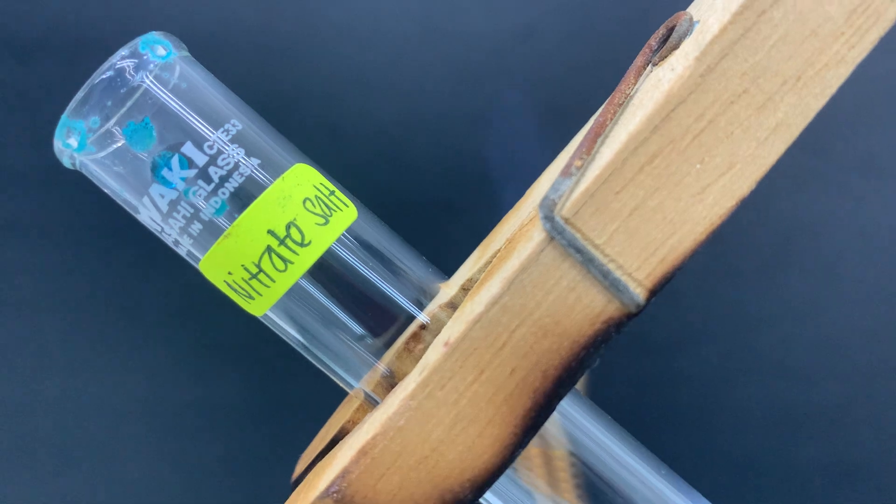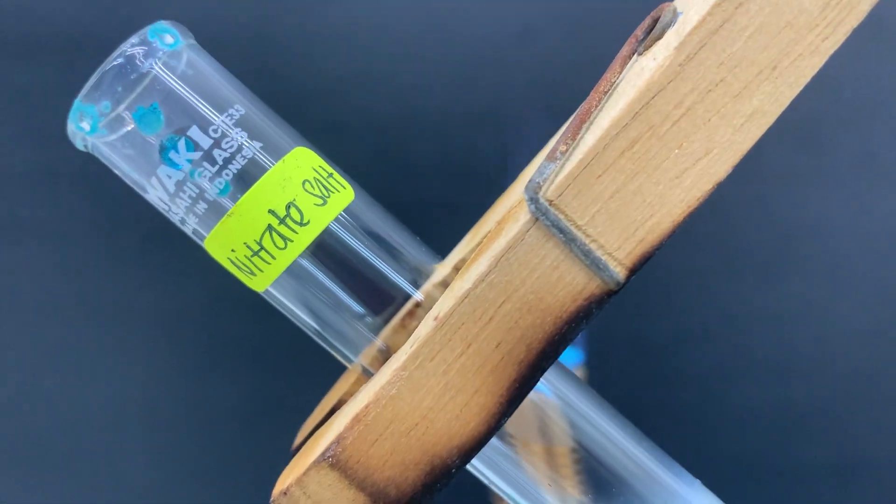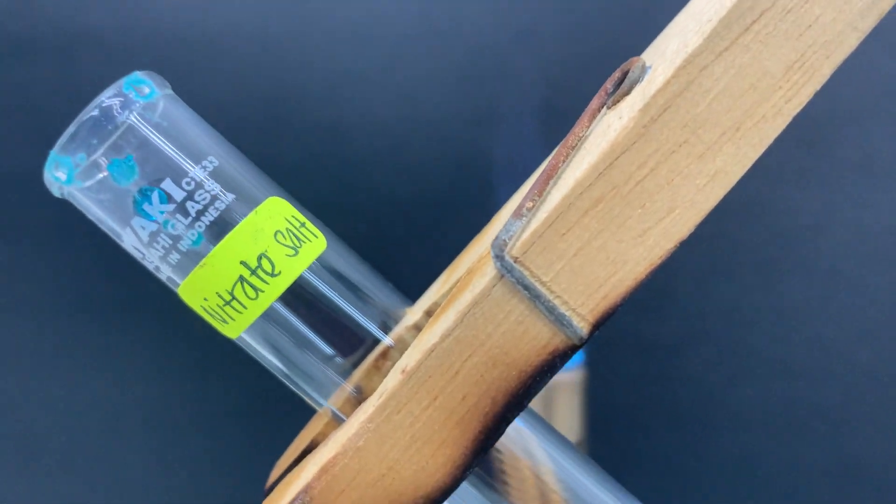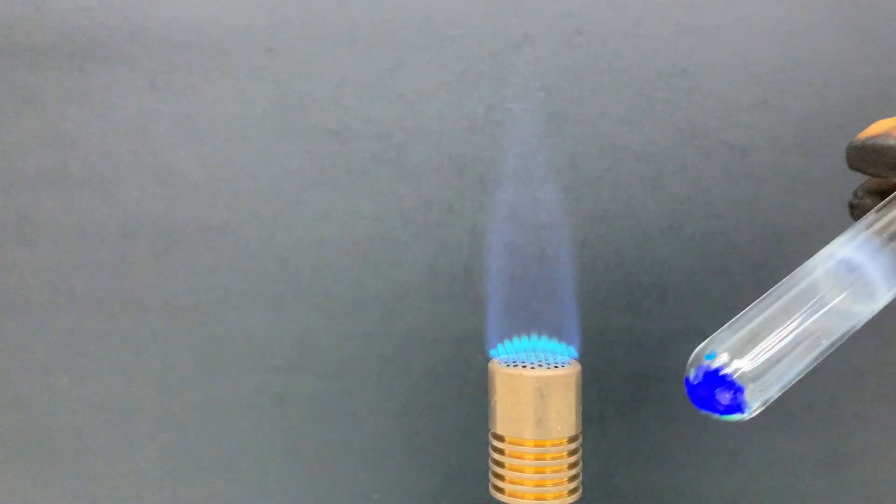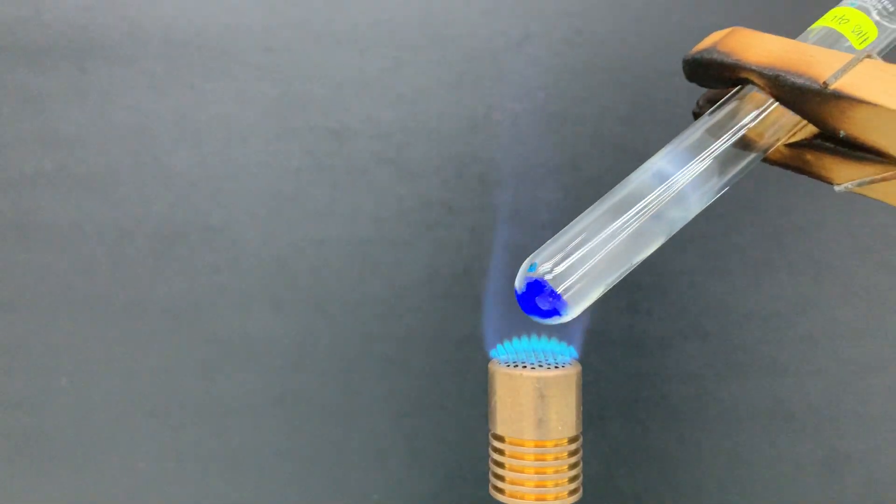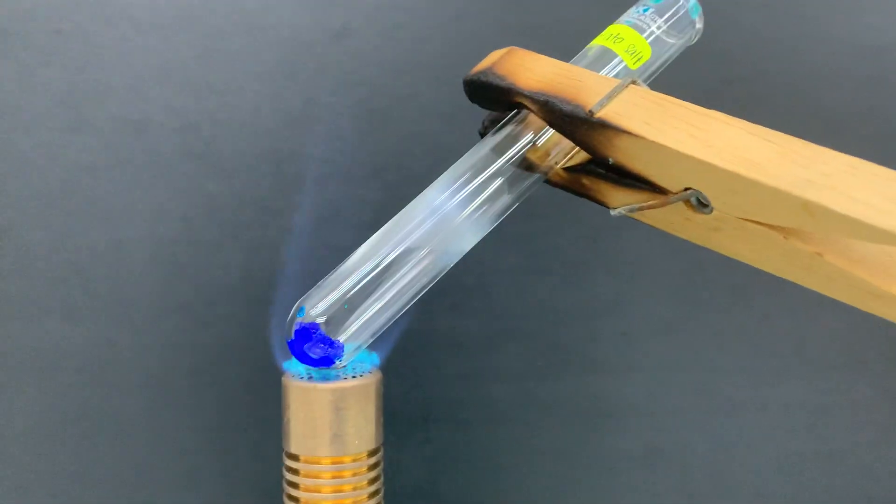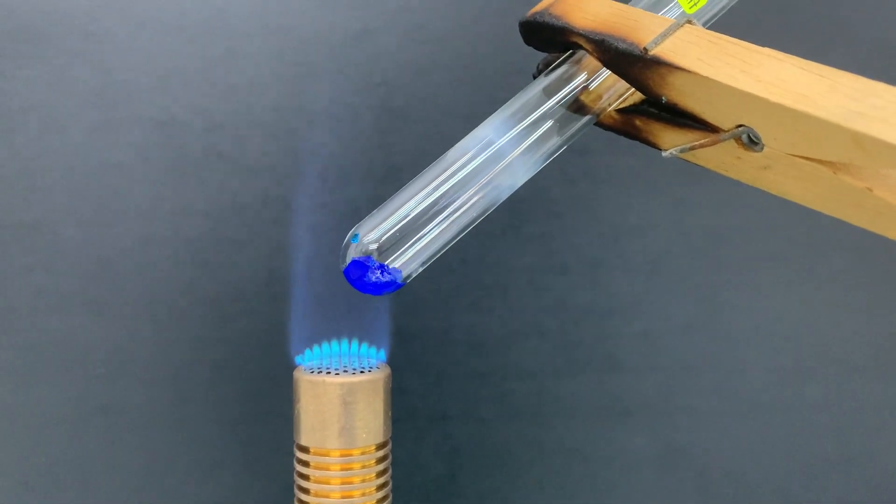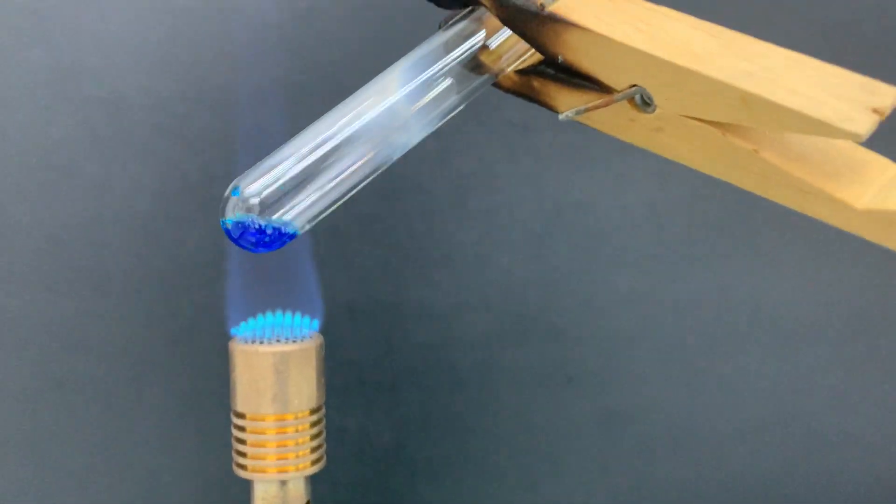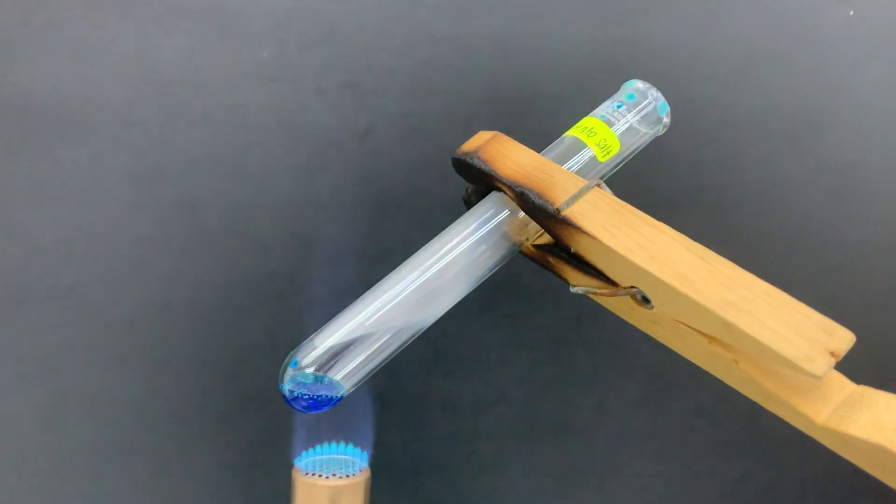You can test it with thermal decomposition by using a Bunsen burner. So I have a Bunsen burner and then I try to heat it. You can see that we try to heat the nitrate salt.